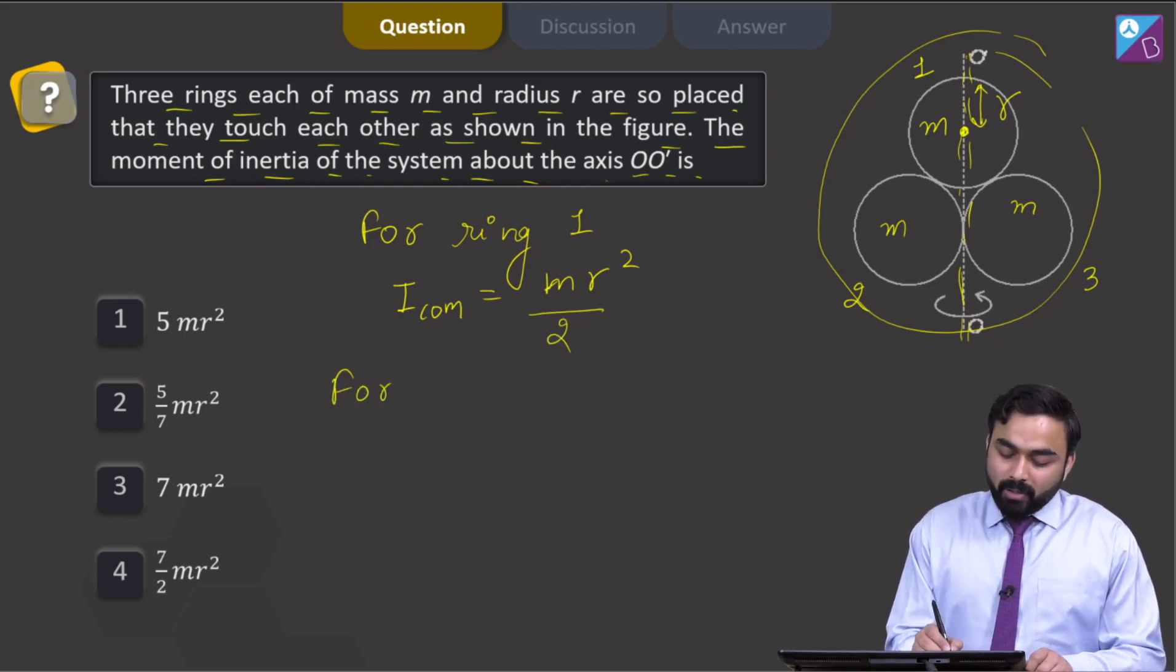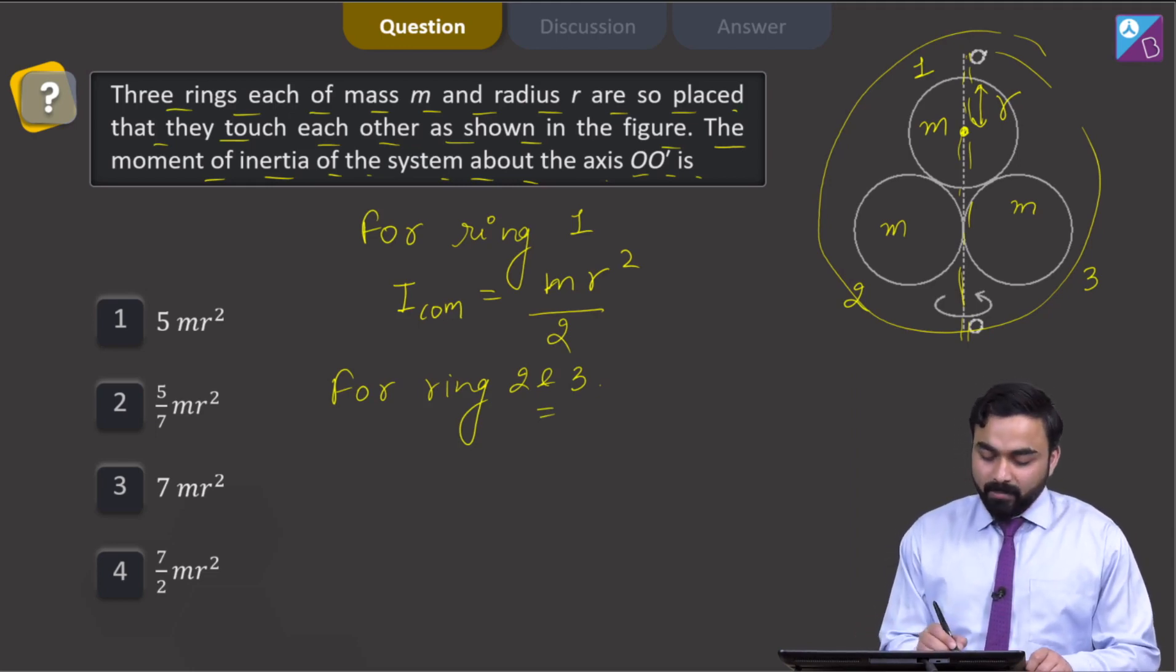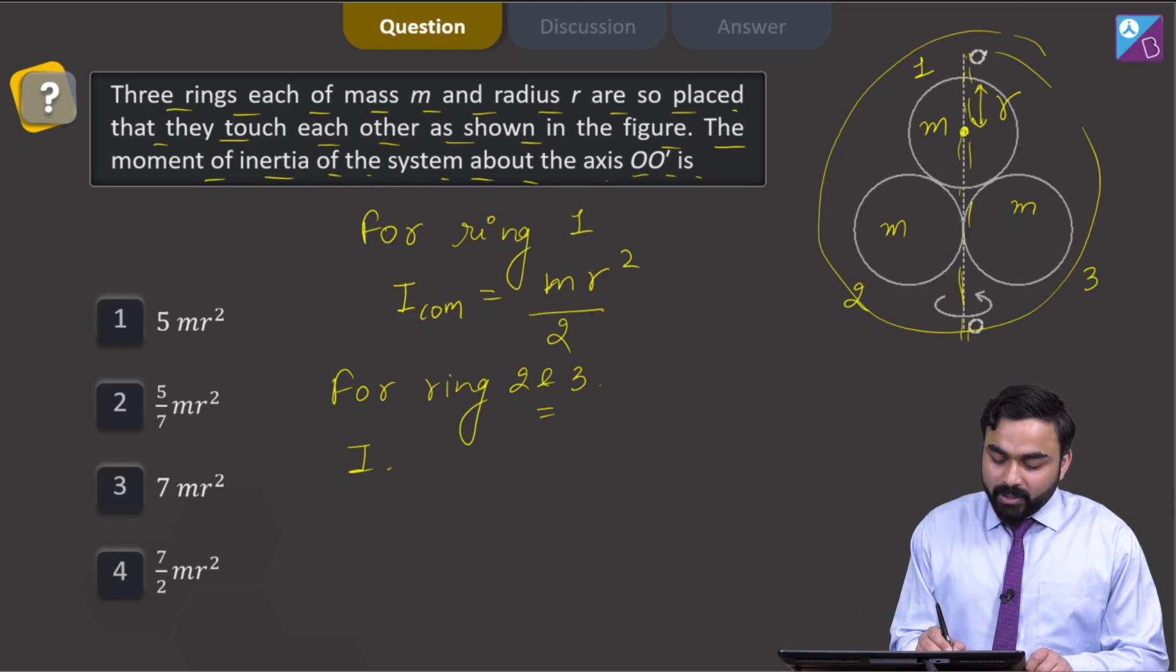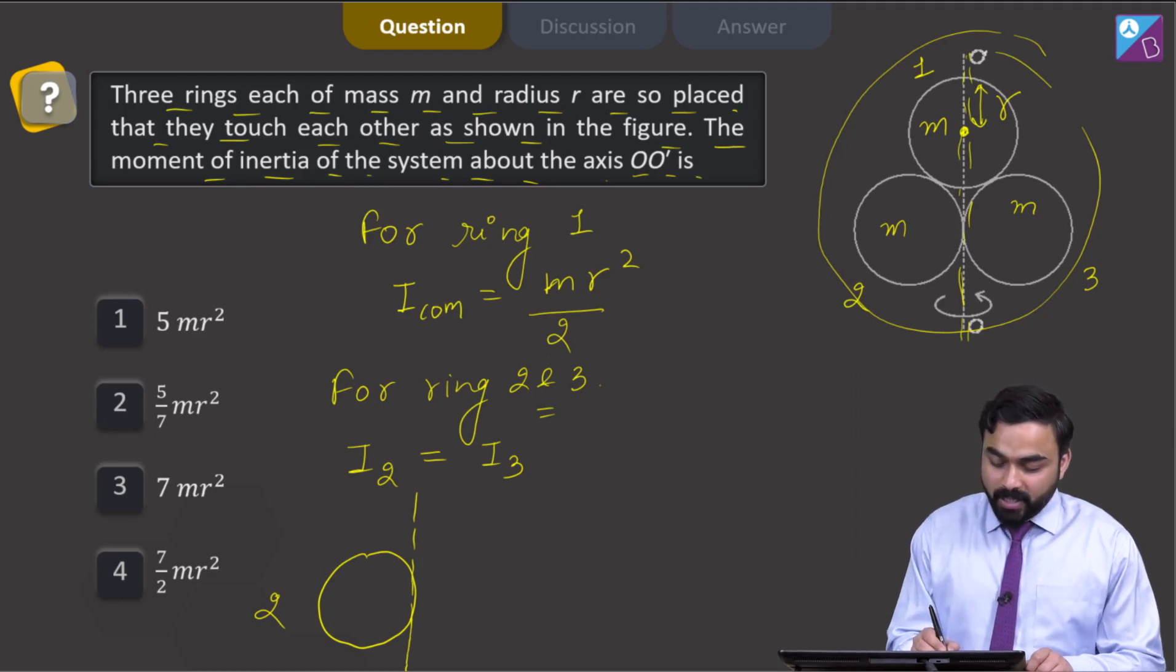For rings 2 and 3, the moment of inertia will be the same. Moment of inertia of ring 2 will be equal to moment of inertia of ring 3. If I closely examine ring number 2, the axis of rotation is passing through here, where O and O' are located.